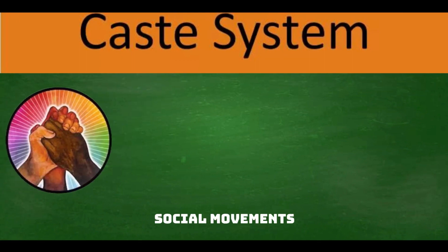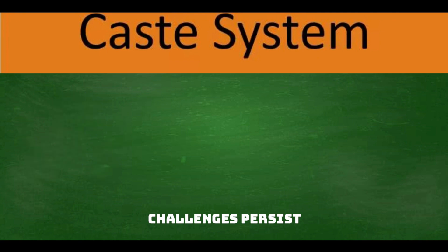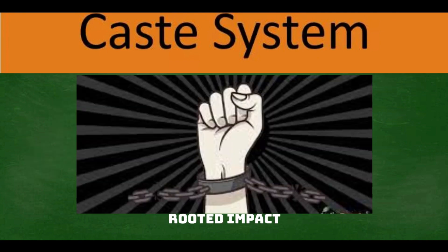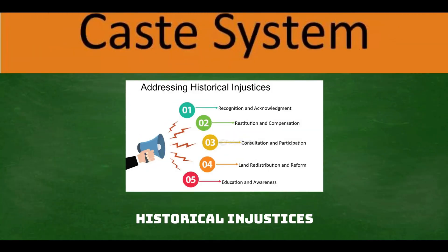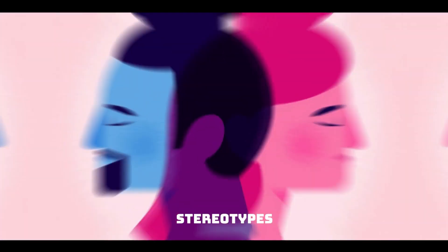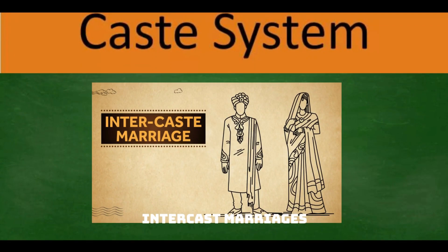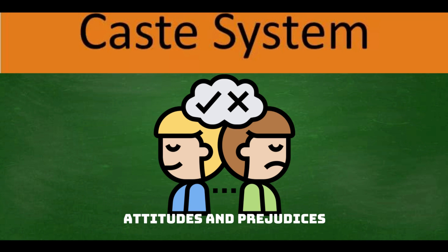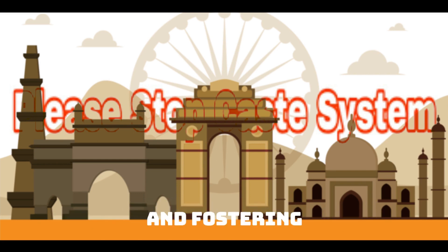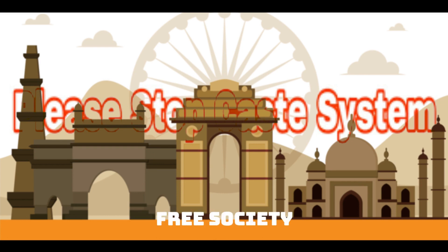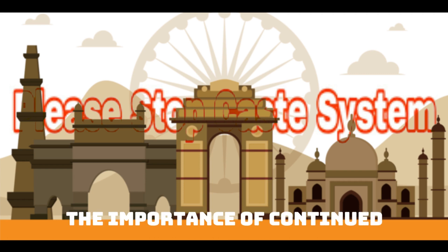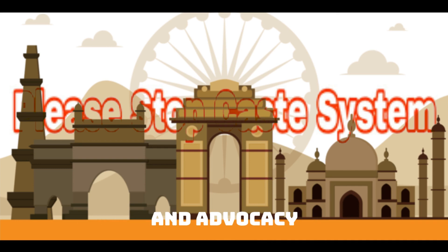Despite the strides made by social movements, legal reforms, and technological advancements, challenges persist in dismantling the caste system's deep-rooted impact. The reservation system, while addressing historical injustices, has faced criticisms for potentially perpetuating stereotypes. Inter-caste marriages, once taboo, are gradually gaining acceptance, yet societal attitudes continue to hinder progress. Education and awareness campaigns play a crucial role in challenging ingrained beliefs. The path to a caste-free society remains complex, and the importance of continued dialogue, education, and advocacy cannot be overstated.